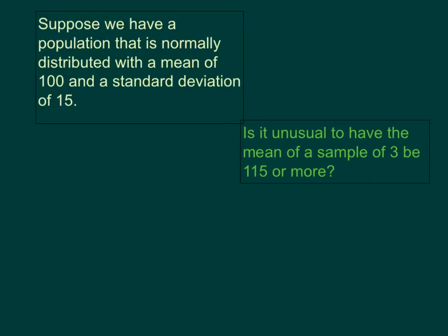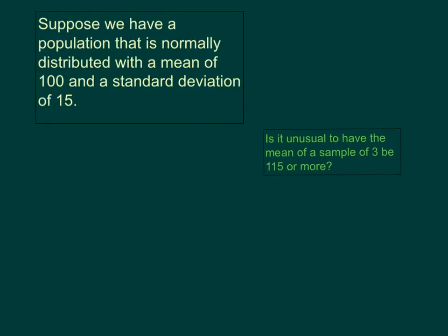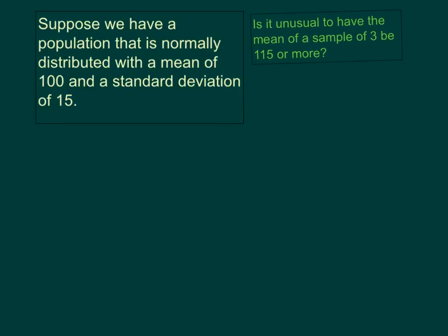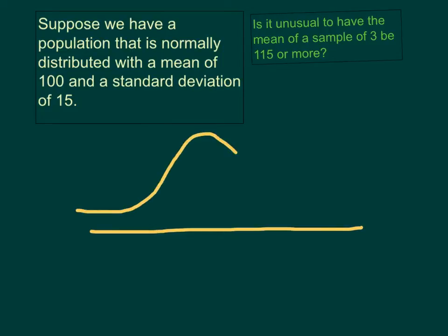Well, we can use the normal distribution and look at that probability and see if it is less than or equal to 5%. So let's take a look. Let's draw our normal distribution curve and sketch it out and see how this looks on the curve. Let's mark where our mean and our sample values are.